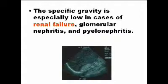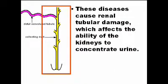The specific gravity or density is very low when there is renal failure. In renal failure, you can generally see an echogenic small kidney, because the cortex — the part that produces urine — is no longer present. This disease causes renal tubular damage, which affects the ability of the kidney to concentrate the urine.